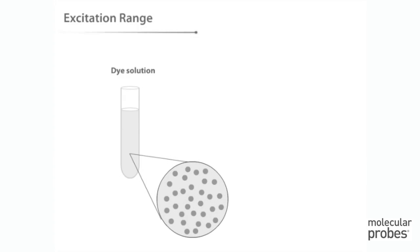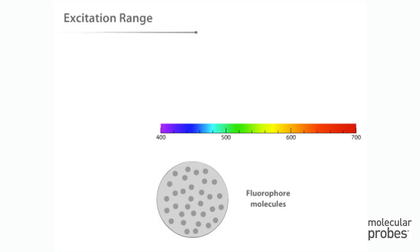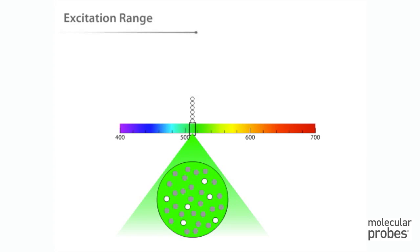If we shine 480 nanometer light at the dye solution, some of the fluorophore molecules will become excited. However, the majority of the molecules are not excited by this wavelength of light. As we increase the excitation wavelength, say to 520 nanometers, more molecules are excited. However, this is still not the wavelength at which the proportion of excited molecules is maximal.